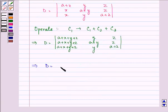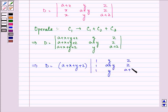Now on taking out a plus x plus y plus z common we are left with 1, 1, 1 in the first column, y, a plus y, y, z, z, a plus z in the remaining columns.